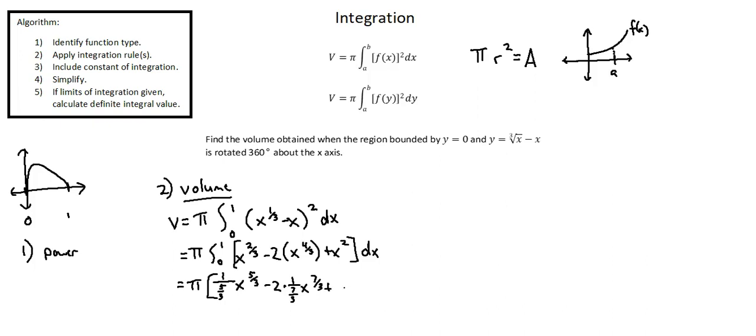plus x to the power of two. Once again, increasing the exponent here from two to three. And then multiplying by one over that exponent, one over three.